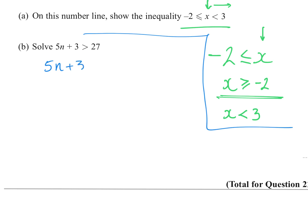Part b: solve 5n + 3 > 27. Subtract 3 from both sides: 5n > 24. Divide both sides by 5 — since 5 is positive the inequality sign doesn't change — giving n > 24/5. You can leave it as 24/5 rather than converting to 4.8.